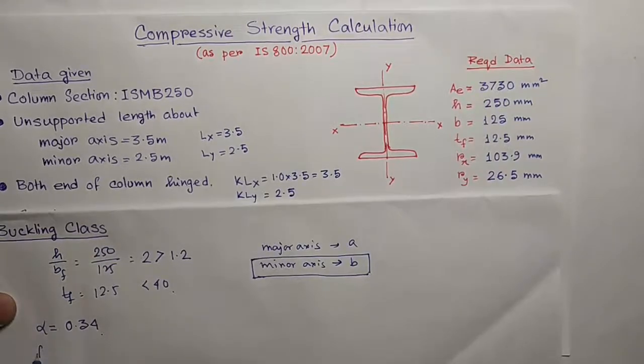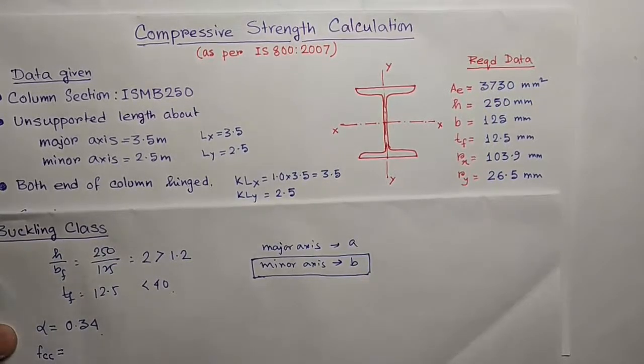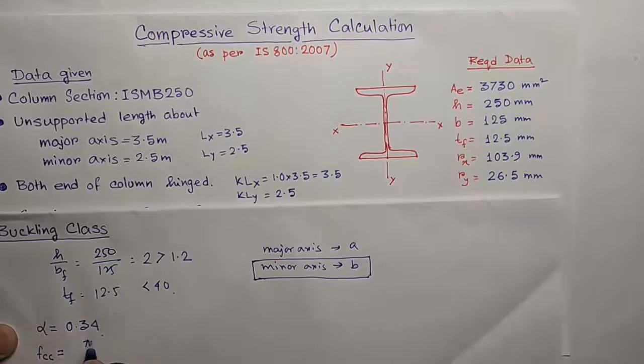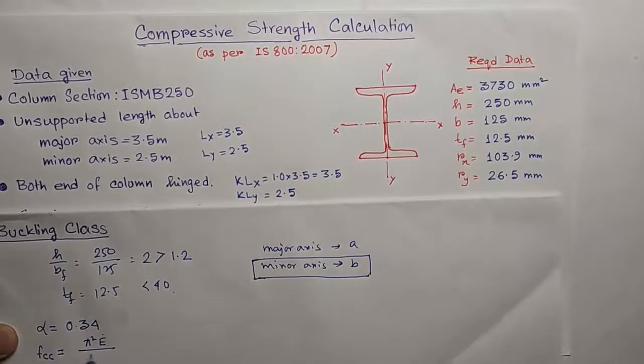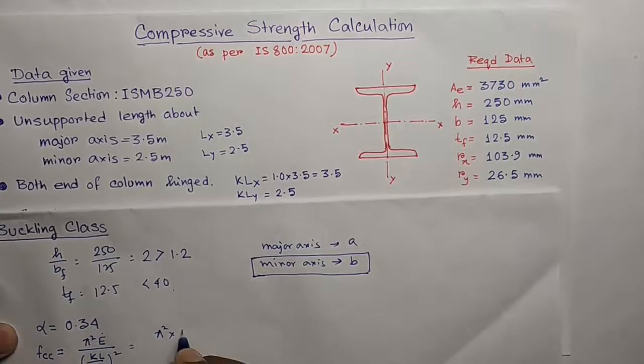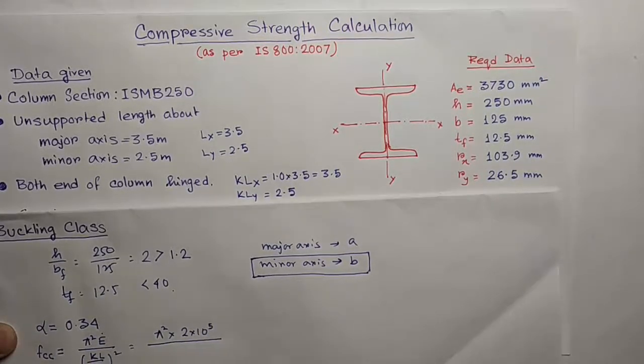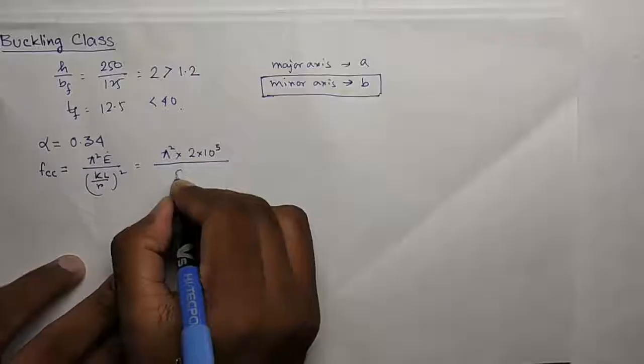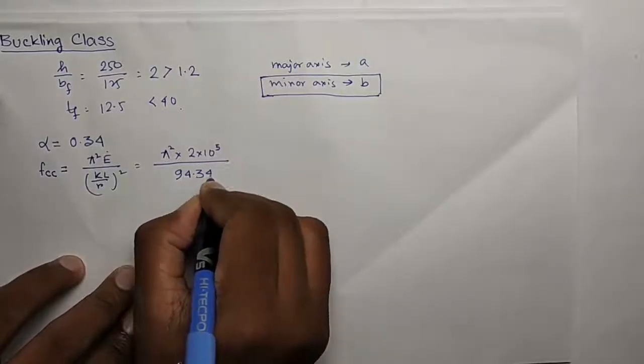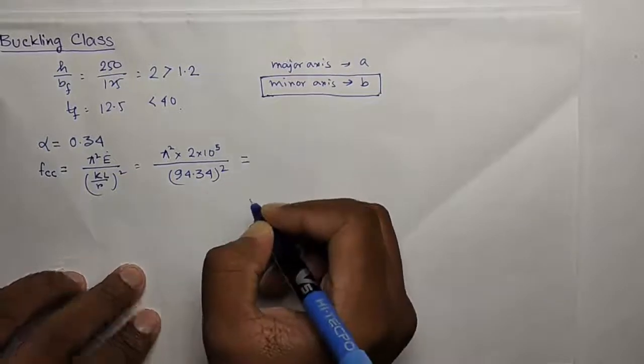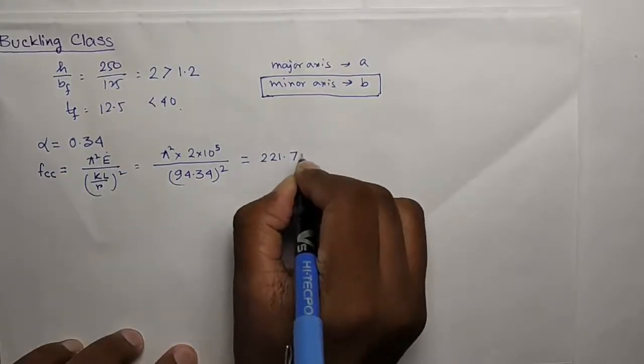Now we have to calculate FCC which is the Euler buckling stress. The formula is pi squared E by (KL by R) squared. Pi squared into E is 2 into 10 to the power 5 and the KL by R is the maximum slenderness ratio which is 94.34, so 94.34 squared. You will get this 221.79.